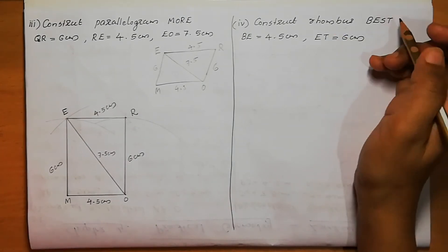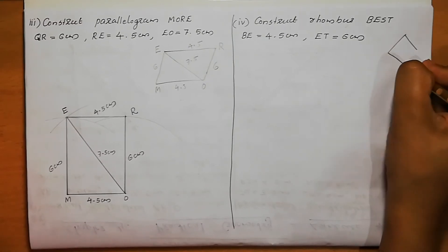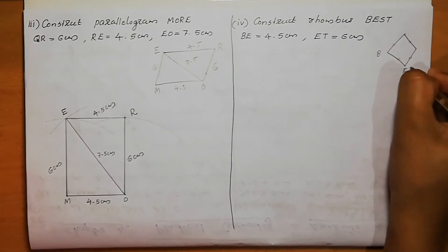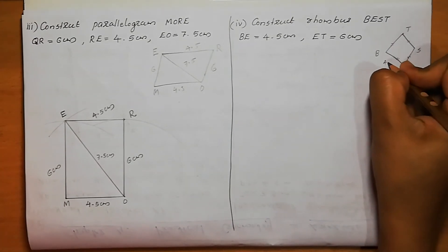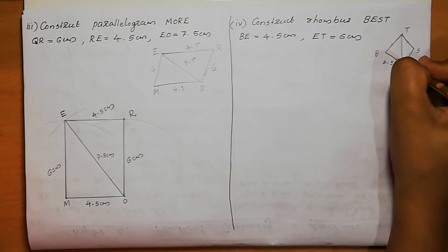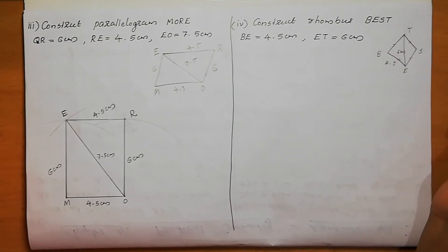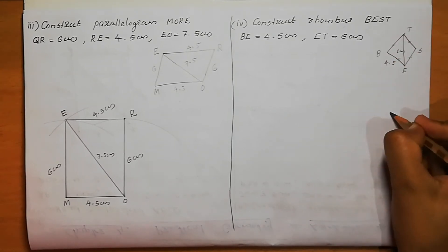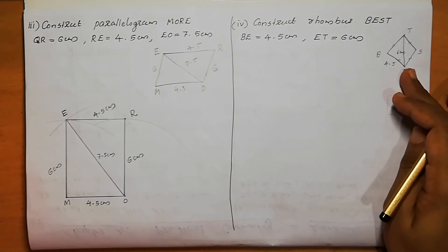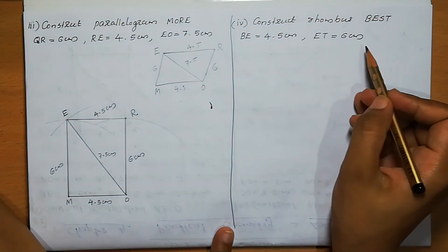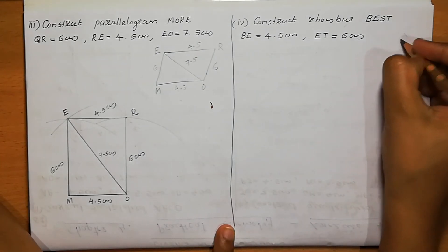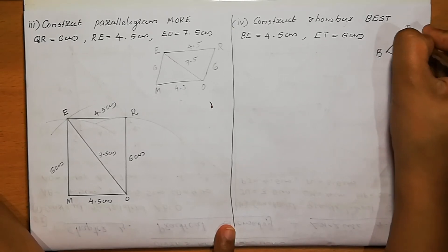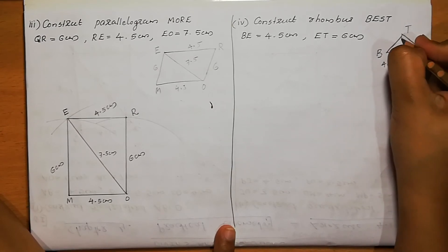Question number 4: Construct rhombus BEST, BE = 4.5 and ET = 6 cm. Rhombus means all four sides are equal. So in rhombus BEST, all sides are 4.5 cm, and the diagonal ET = 6 cm. We will take BE as the base — if BE is the base the figure comes out looking like a square, but if you tilt the page it appears as a rhombus. BE = 4.5 cm.